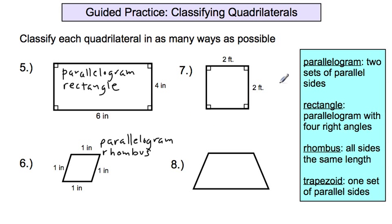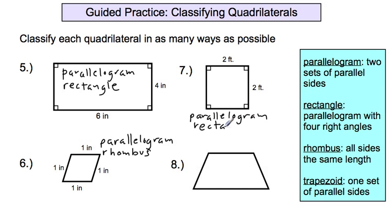How about shape seven? Is it a parallelogram? Everything looks parallel, so shape seven is a parallelogram. Is it a rectangle? Does it have four right angles? One, two, three, four — it's also a rectangle. Is it a rhombus? Two feet, two feet, two feet, two feet — all sides are the same length, so it's a rhombus. And since it is a parallelogram, it can't be a trapezoid.